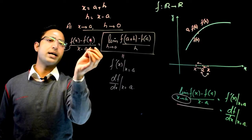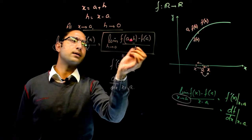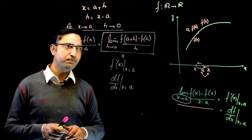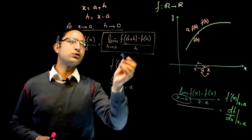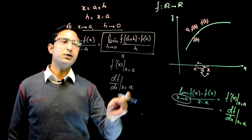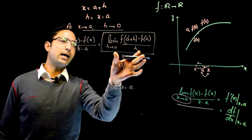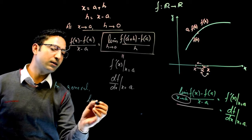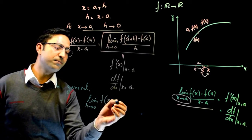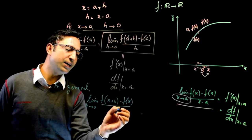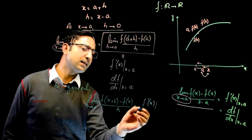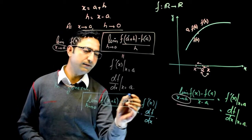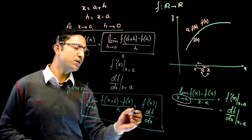So we now have two definitions of the derivative of f at point a: either the limit as x → a of [f(x) − f(a)] / (x − a), or the limit as h → 0 of [f(a + h) − f(a)] / h. We can generalize to the derivative at any point by replacing a with x. In general, the derivative is: limit as h → 0 of [f(x + h) − f(x)] / h, which is the derivative of f at any point x, also denoted df/dx.